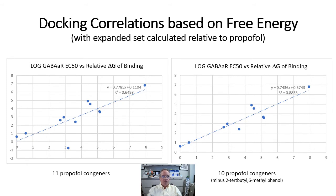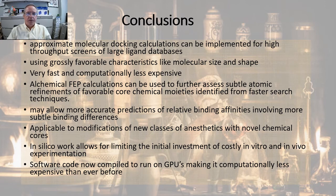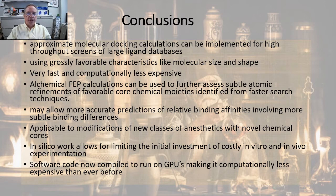Reasons for outliers, despite the more robust free energy calculation, are many, including alternate binding poses within a single binding site as well as additional binding sites. In our previous work, we have shown that approximate molecular docking calculations can be implemented for high-throughput screens of very large ligand databases. However, these use grossly favorable characteristics like molecular size and shape, which may not consider the subtle characteristics of binding for compound classes such as anesthetics.